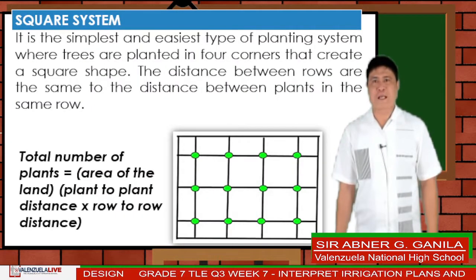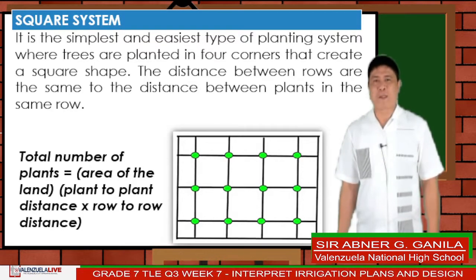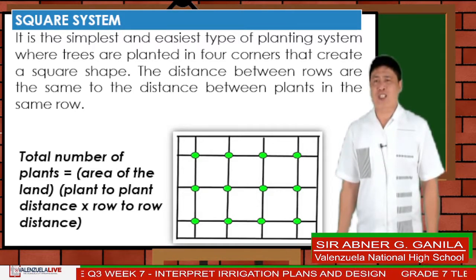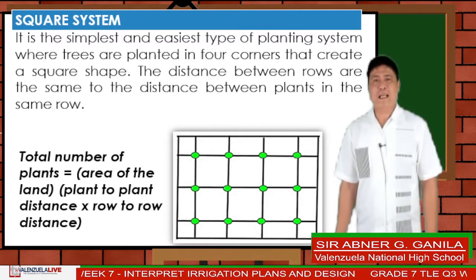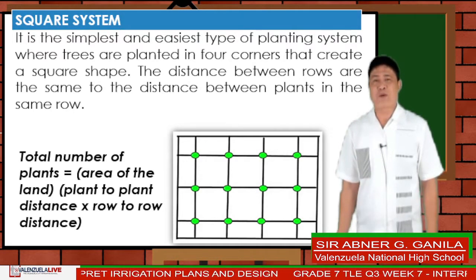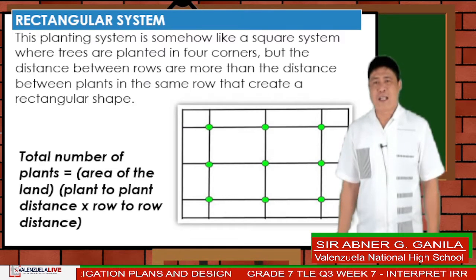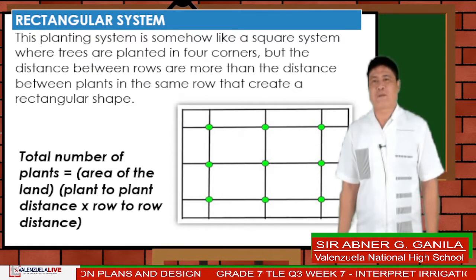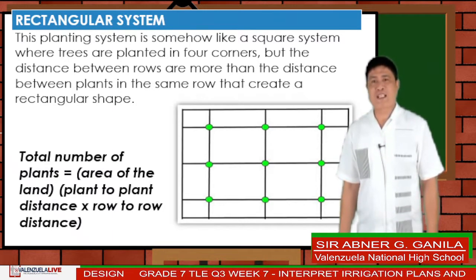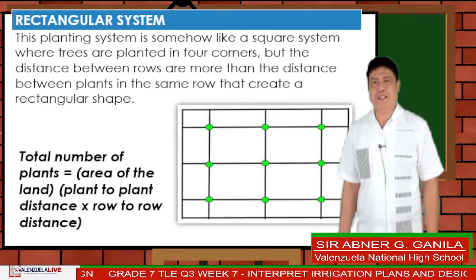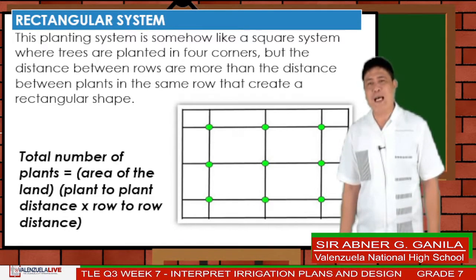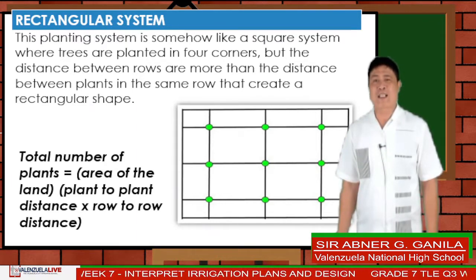Square system: the simplest and easiest type of planting system, where trees are planted in four corners that create a square shape. The distance between rows is the same as the distance between plants in the same row. Another is the rectangular system, which is similar to the square system but the distance between rows is more than the distance between plants, creating a rectangular shape.